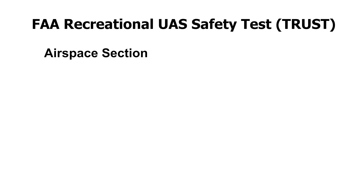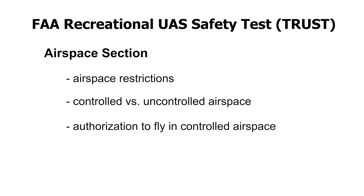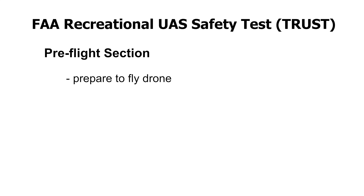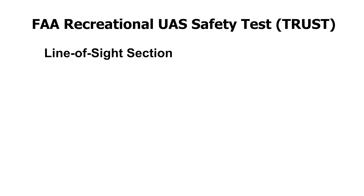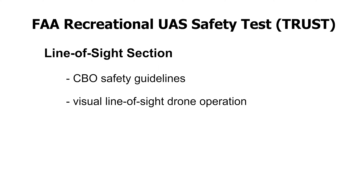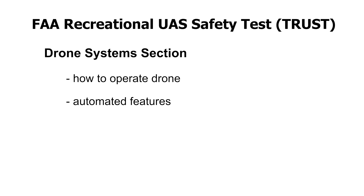The Airspace section goes over where you can and cannot fly, what is controlled versus uncontrolled airspace, and how to obtain authorization to fly a drone in controlled airspace. The Pre-Flight section goes over what you need to know before flying your drone: weather, your mental and physical state, and the condition of the drone. The Line of Sight section talks about community-based organization safety guidelines and the importance of operating your drone within visual line of sight. The last section walks you through things like how to operate your drone, its automated features, drone registration, and practice flights.